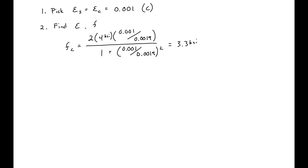We do the same for the steel, which is a little simpler. Our strain of 0.001 is less than the yield strain, so we use the modulus of elasticity times the strain: 29,000 KSI times 0.001, giving a steel stress of 29 KSI.